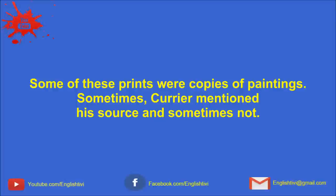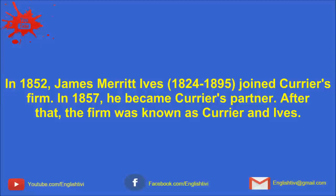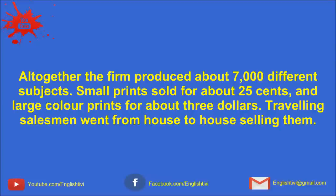Sometimes Courier mentioned his source, and sometimes not. In 1852, James Merritt Ives, 1824 to 1895, joined Courier's firm. In 1857, he became Courier's partner. After that, the firm was known as Courier and Ives. Altogether, the firm produced about 7,000 different subjects. Small prints sold for about 25 cents, and large color prints for about $3.